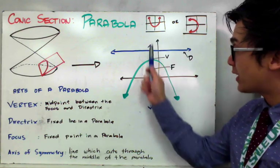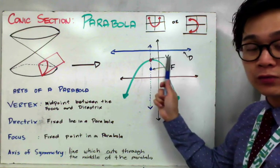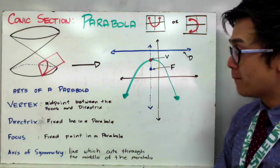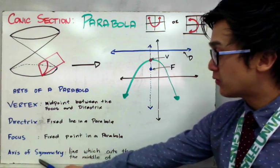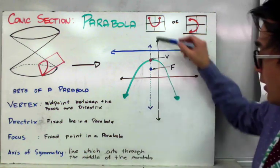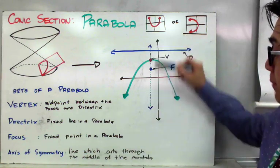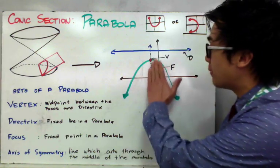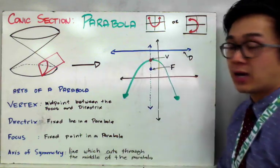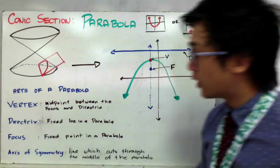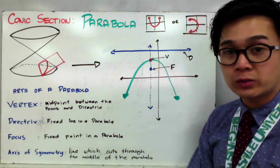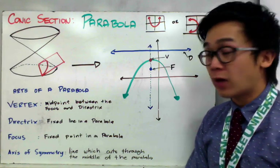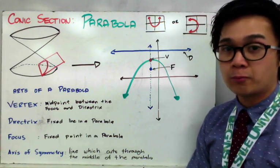All these parts go hand-in-hand because if you know the parts, you would know how the parabola is supposed to open. The axis of symmetry is the line which cuts through the middle of the parabola, so you'll have a mirror image of the left side and the right side. These are the parts of your parabola that we're going to use when analyzing and writing the standard equation.